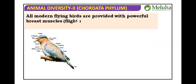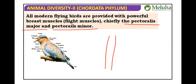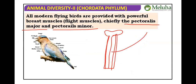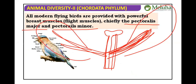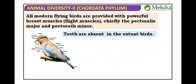All modern flying birds have powerful breast muscles for flight, chiefly pectoralis major, pectoralis minor, and coracobrachialis brevis or longus. The sternum is broad with the keel or carina, facilitating attachment of these strongest muscles that insert into the wings.